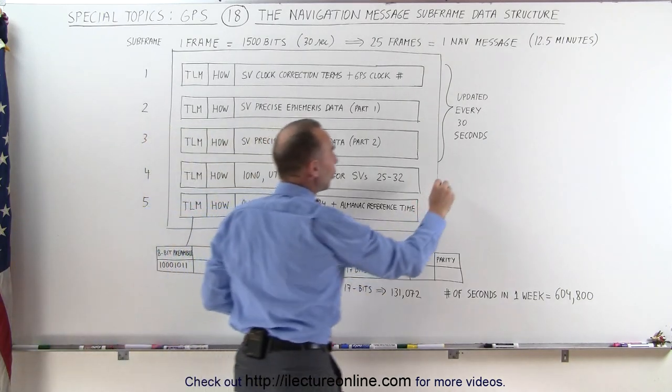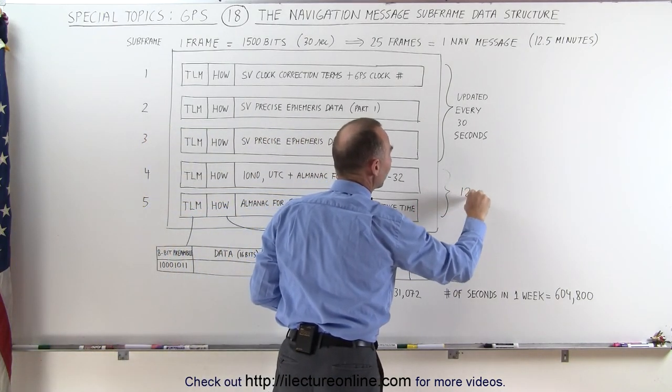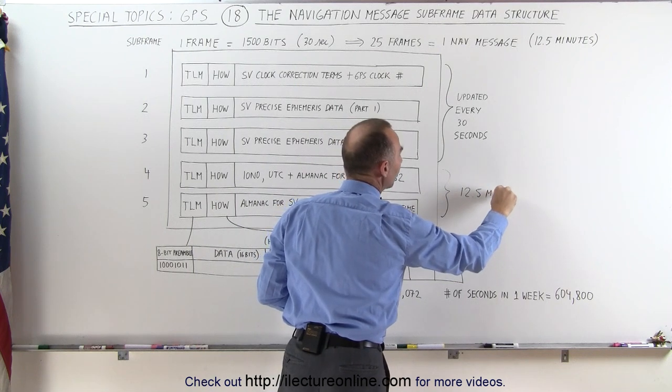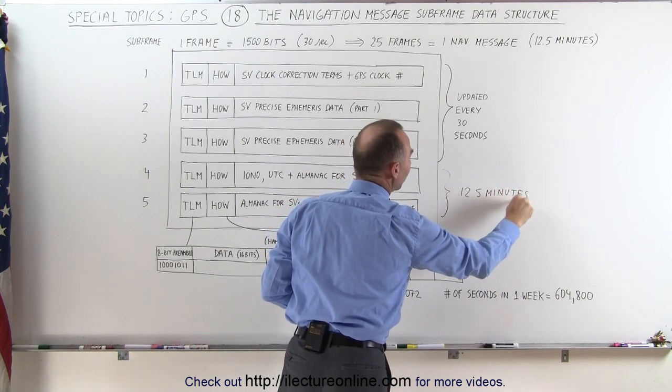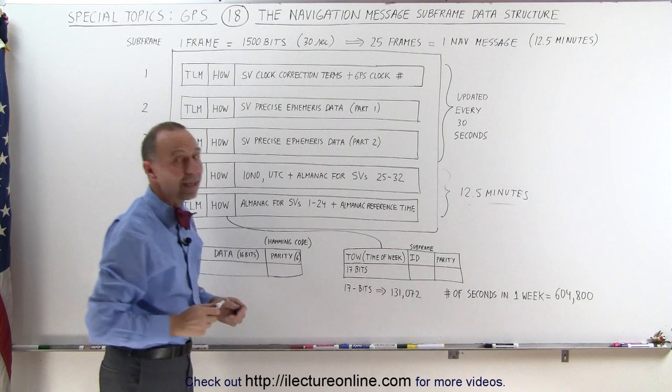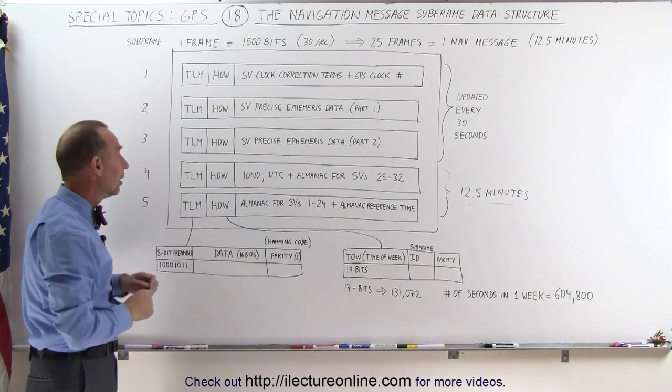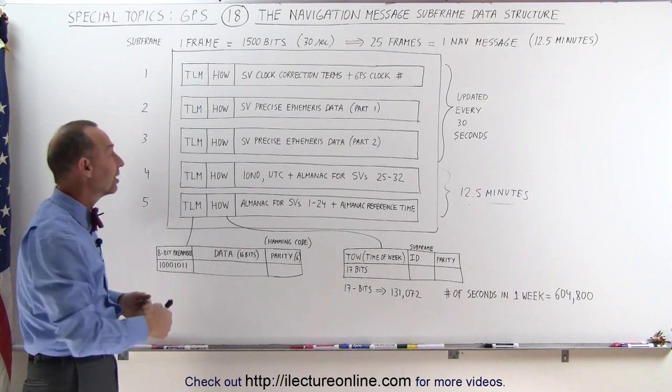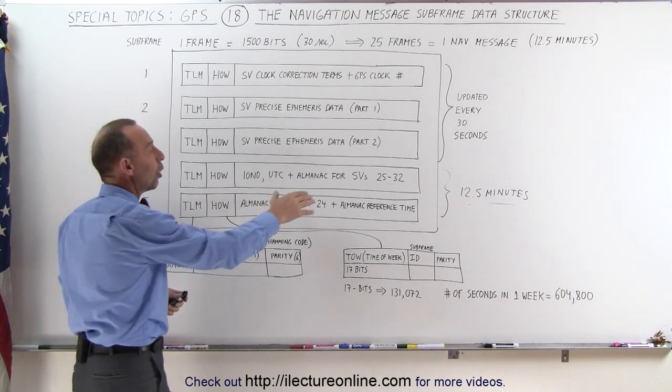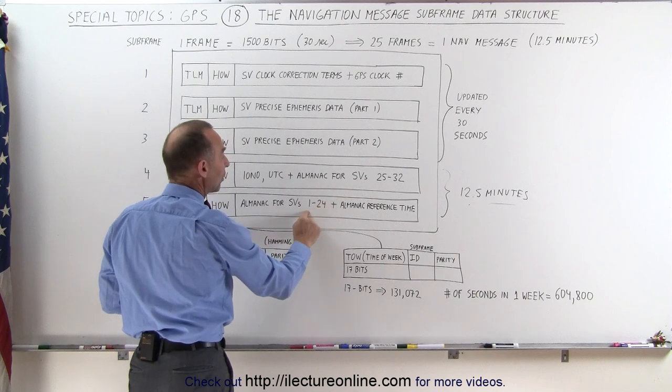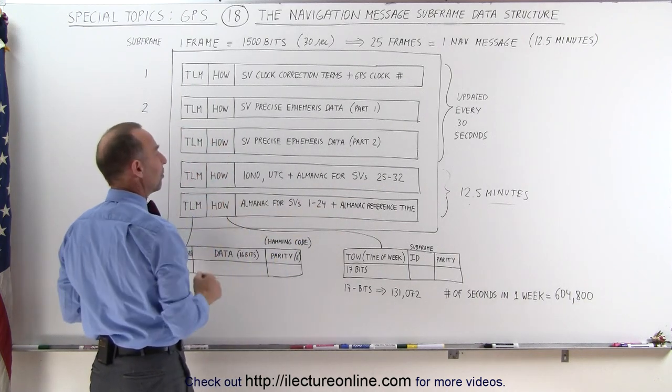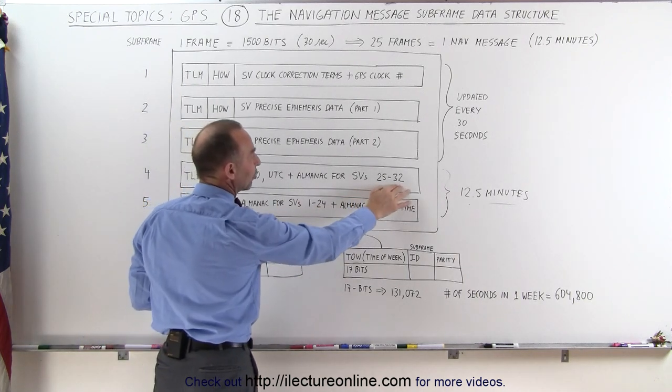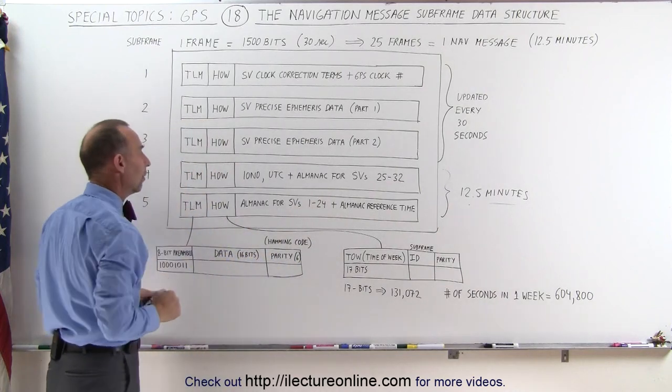The last two only need to be updated every 12.5 minutes, and notice that from subframe to subframe, they do not contain the same data. In totality, the two subframes of each frame for all 25 frames contain all of the almanac data of all the Space Vehicles 1 through 24 in subframe 5 and 25 through 32 in subframe 4.